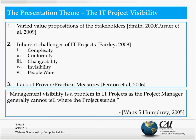Based on literature studies, there are three major areas where these issues have been identified. The first would be the varied value propositions of the stakeholders. If you look at an IT project — even a 10-member team with a team lead, project manager, a couple of developers, a tester, and an analyst — there are many people outside the project who have significant influence on its outcome.